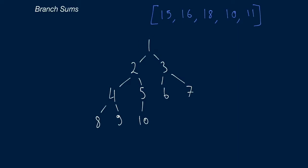For instance, if we start at node 1 here, we would call our recursive function on this root node and say right now our running sum is 0. We haven't added any numbers yet. Our root node has two children nodes — one to the left and one to the right. So we would call the recursive function on these two children nodes, but pass in our running sum, which at this point would be 0 plus 1, equal to 1.